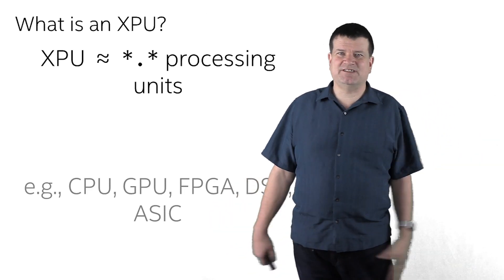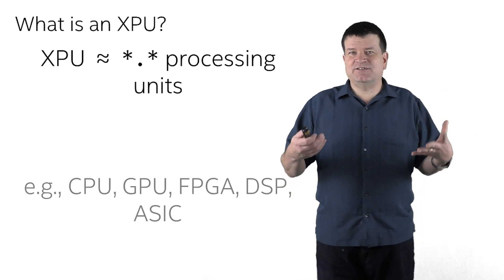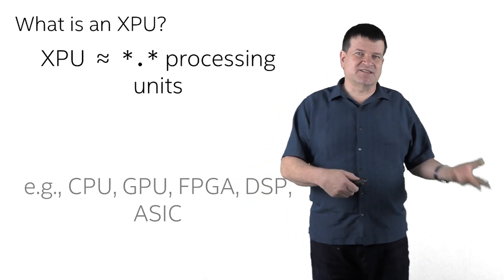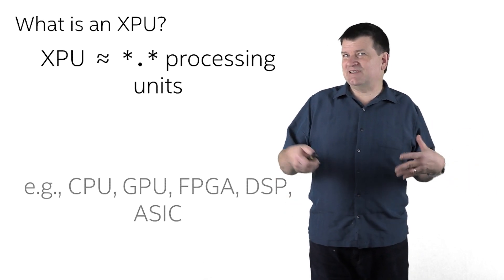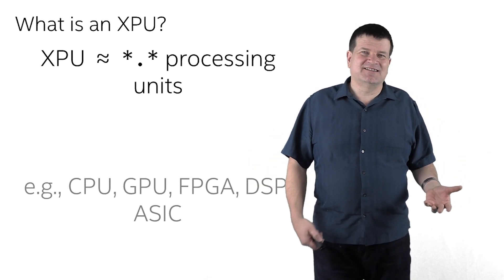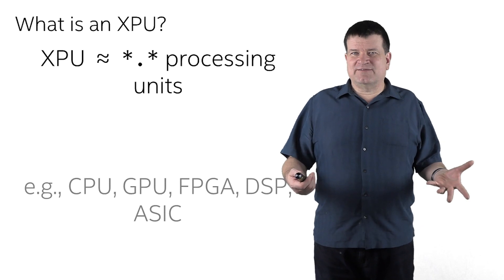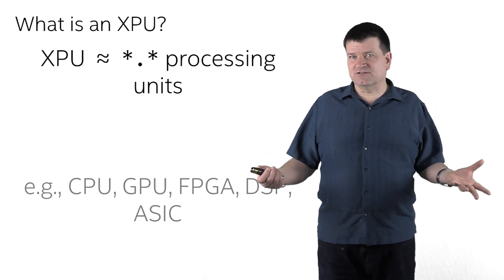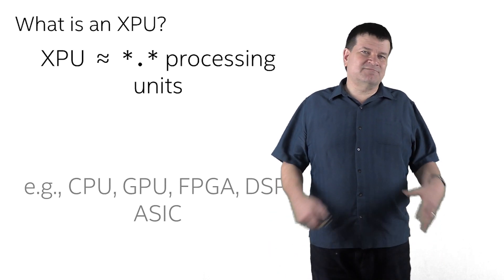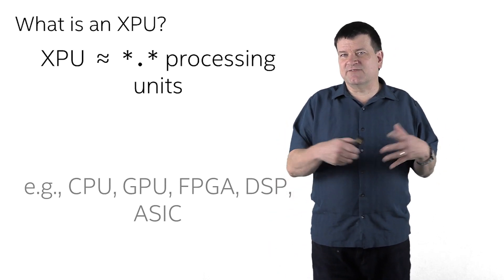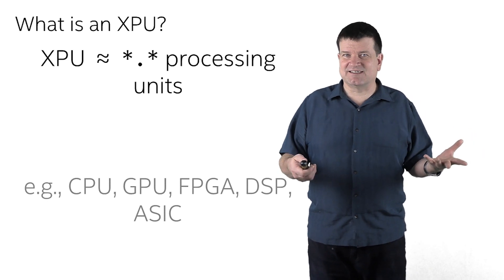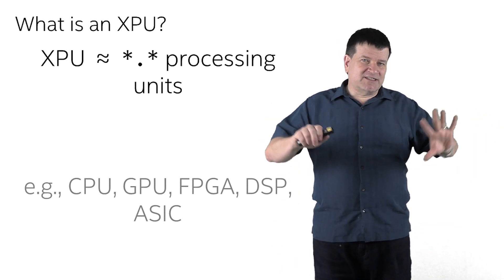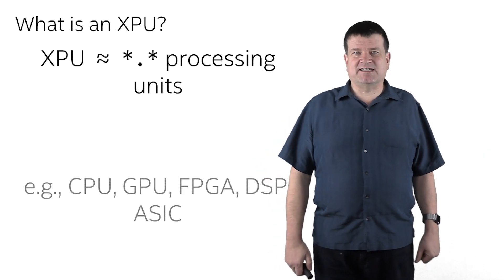What the heck is an XPU? I use XPU to mean star-dot-star processing units. For instance, CPUs, GPUs, FPGAs, DSPs, ASICs. They don't all have to end in PU for processing unit — in fact, most of those are taken. So we can expand the namespace a little and consider FPGAs and DSPs and ASICs to be part of my XPU world. So now we know what an XPU means when I say it.